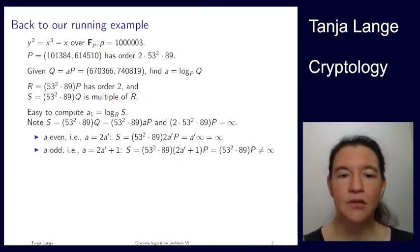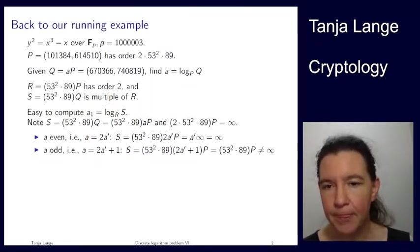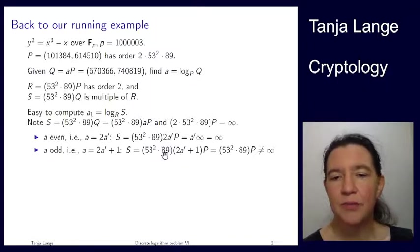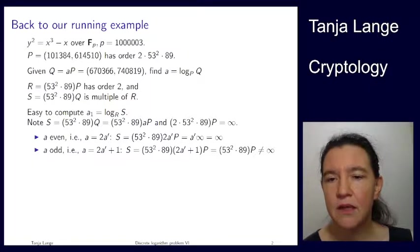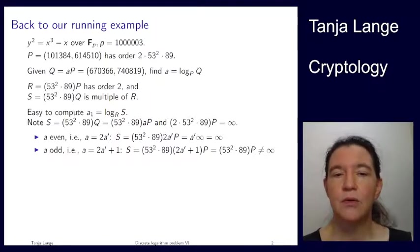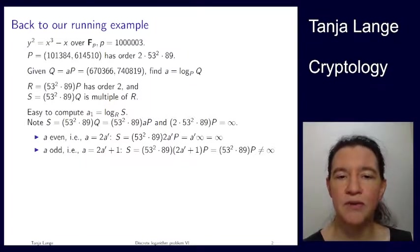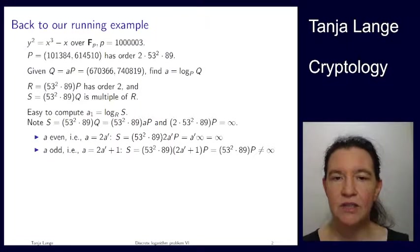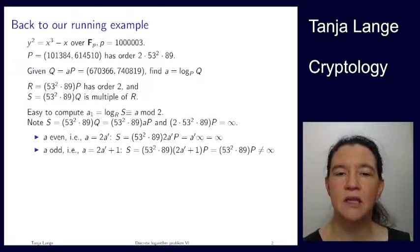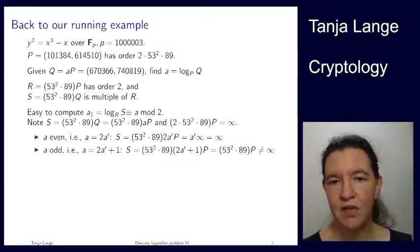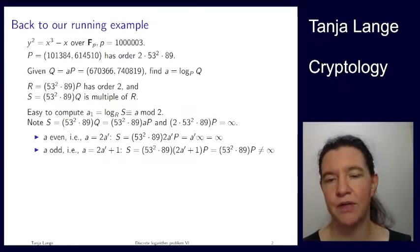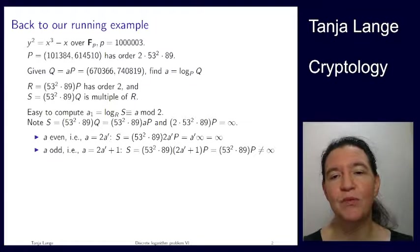But if a is odd, so then we can write it as 2a′ + 1, and we're doing the same substitution again. We're again substituting 2a′ + 1 for a. Well, the beginning part, the multiplication with the 2a′, again gives infinity, so I'm skipping that part, and then the rest is the point R that we computed up here, and that one has order 2, so it's definitely not infinity. So, the discrete log that we computed here, this a₁, the discrete log of S base R, it is 1 exactly if a is odd, and it's 0 if a is even. So, actually, this a₁ here matches the discrete log of a modulo 2. If it's even, you're getting 0 for a₁, and if it's odd, you're getting 1.